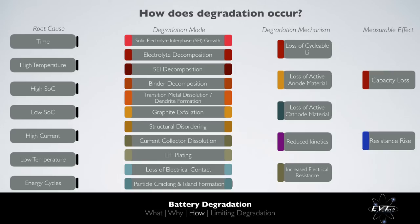Our degradation map shows how root causes of degradation link to particular degradation modes, and the degradation mechanisms these modes invoke, as well as the directly measurable effects of degradation, namely capacity loss and resistance rise. Through our capacity loss measurements, we can estimate the loss of cyclable lithium, as well as the loss of active anode material and the loss of active cathode material. The loss of active anode and cathode material will also be seen within our observed resistance rise, as a greater power output per unit of active material will be required to deliver the same overall power output.